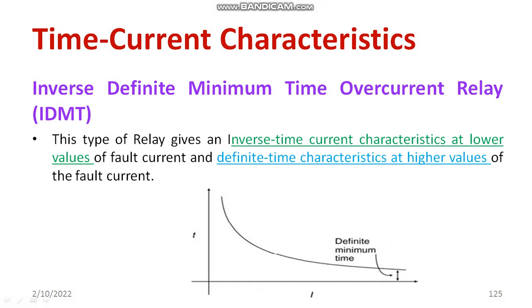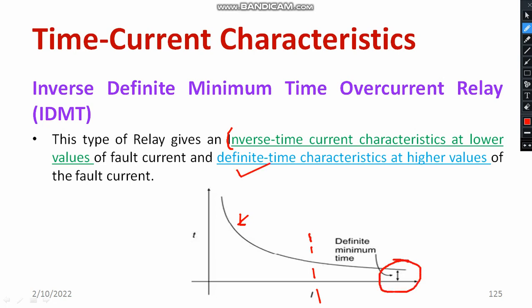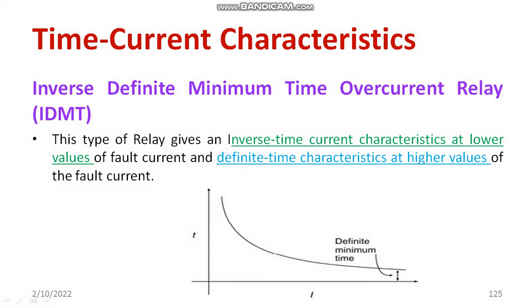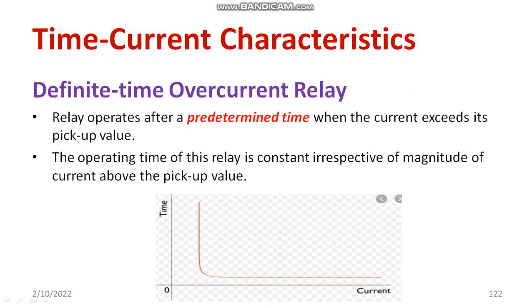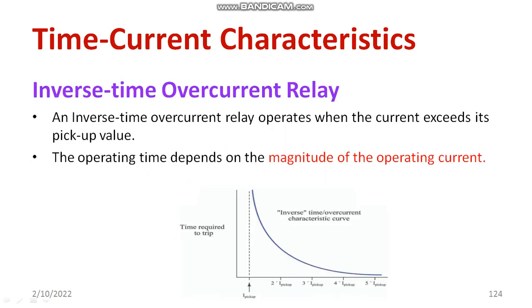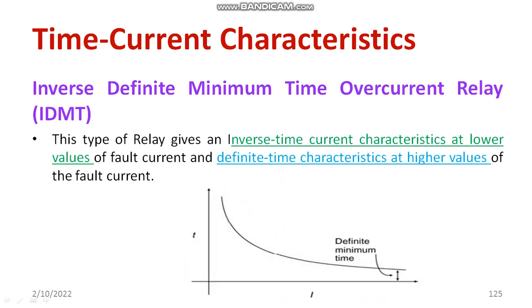Now let's move on to inverse definite minimum time relay, or IDMT. It is similar to the inverse overcurrent type relay, but this relay gives inverse time-current characteristics at lower values of current — it operates just like an inverse time characteristic for lower current values. However, for a high value of fault current, it operates at a definite time. That is why it is known as IDMT — it is a hybrid combining inverse time overcurrent relay and definite time overcurrent relay.